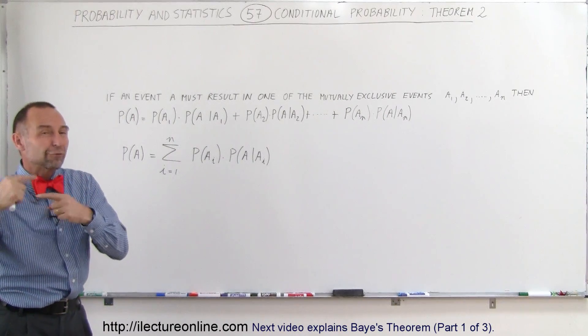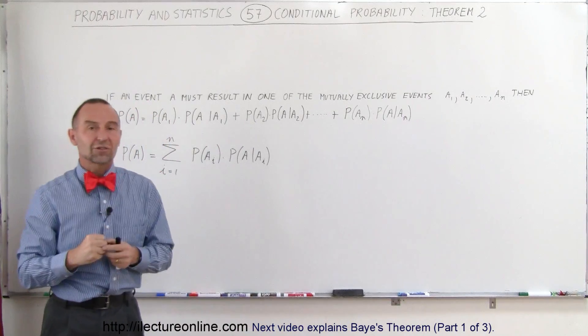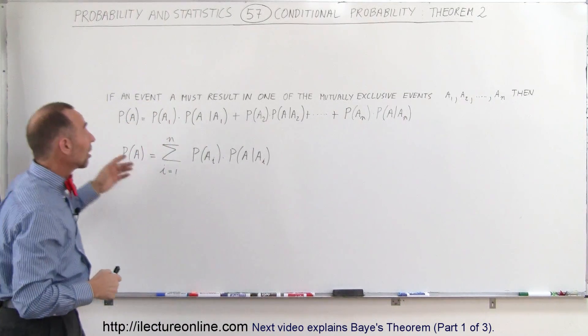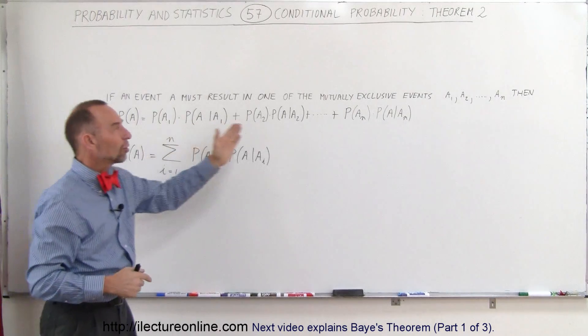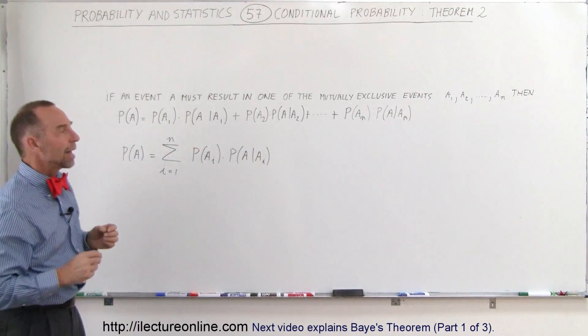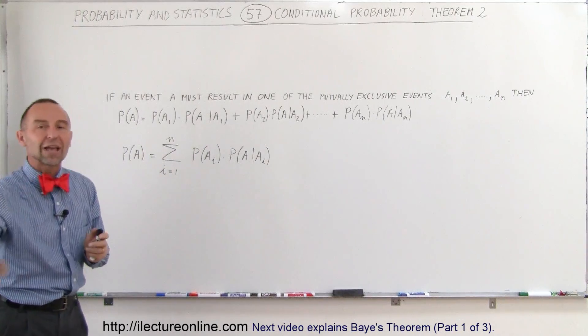Well we can then reverse that process and say if we go in the bag and we grab for example a green one what is then the probability that we tossed either heads or tails that's kind of in reverse. And so that's what this conditional probability theorem is all about. It's all about finding what may happen if something else has happened before.